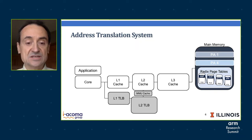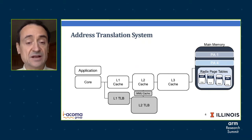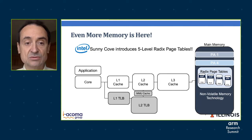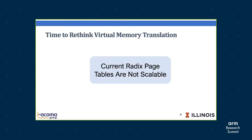You can see that this is a big problem. The problem is about to get worse because with non-volatile memory, we're going to have very large main memories. Intel with the Sunny Cove processors has introduced a fifth level of radix page tables — that means not just four accesses, but five accesses to get to the final translation. It's clear that radix page tables, which are used by all current processors, are not scalable. It is time to rethink virtual memory translation.